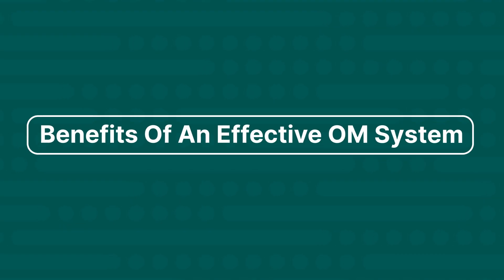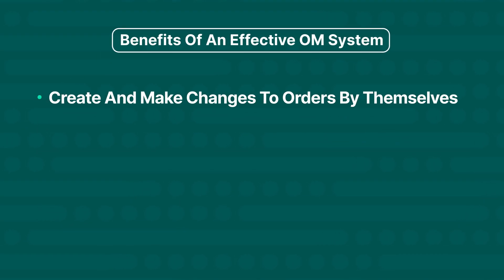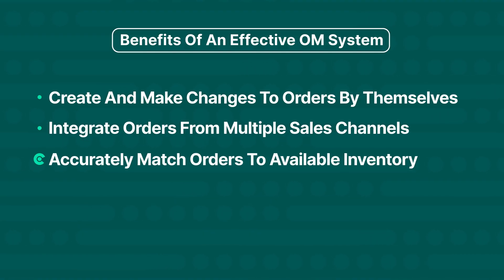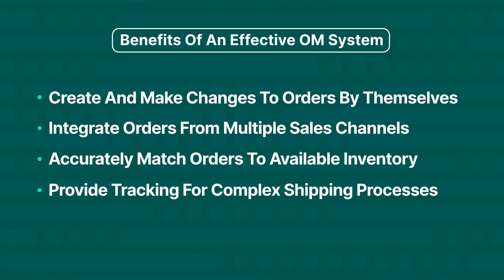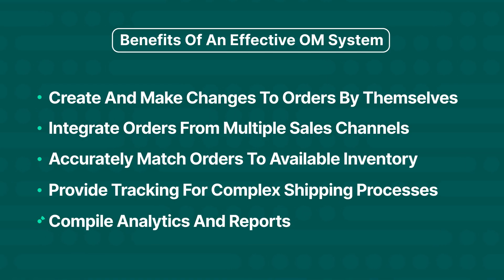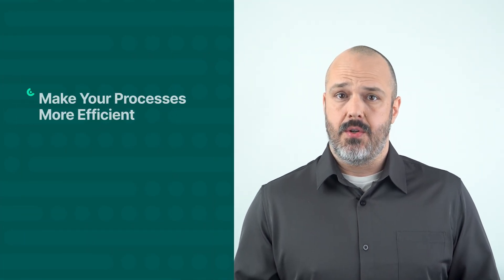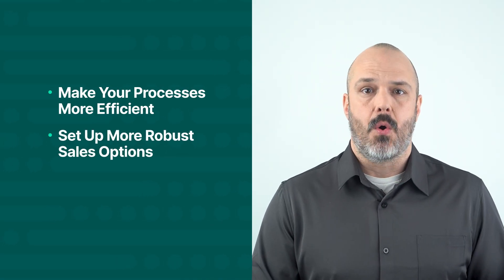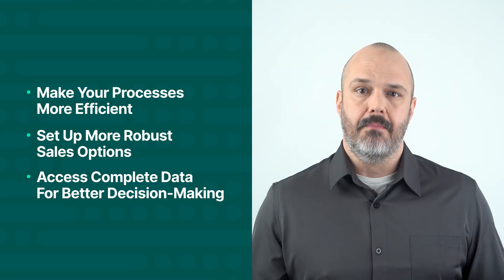An effective order management system can help customers create and make changes to orders by themselves, integrate orders from multiple sales channels, accurately match orders to available inventory, provide tracking for complex shipping processes, and compile analytics and reports. Your business can improve order fulfillment with Salesforce's advanced order management systems, whether you're looking to make your process more efficient, set up more robust sales options, or access complete data for better decision making.